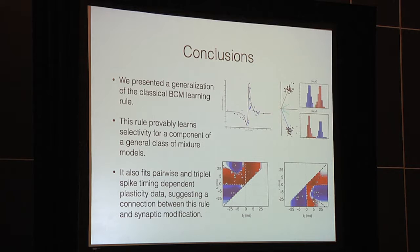In conclusion, we presented a generalization of the classical BCM learning rule. This rule provably learns selectivity for components of a general class of mixture models. It also fits pairwise and triplet spike timing dependent plasticity data, suggesting a connection between this rule and synaptic modification. Thank you.